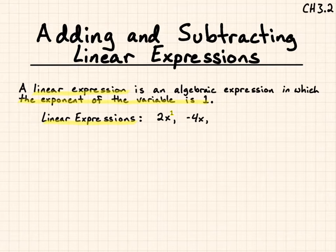Another one, negative 4 times x, a variable by itself has an exponent of 1. So, 5x plus 3 has a exponent, the variable has an exponent of 1.